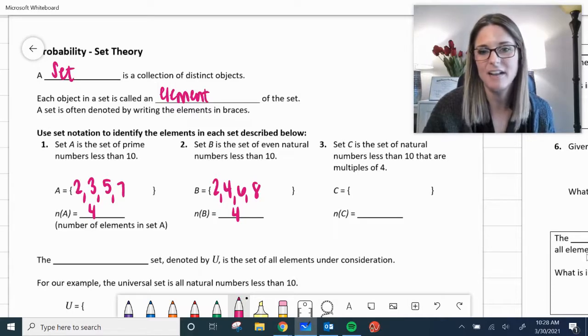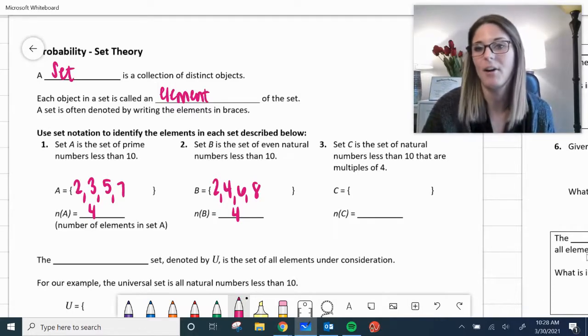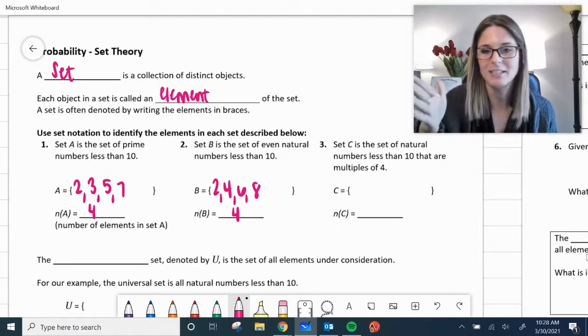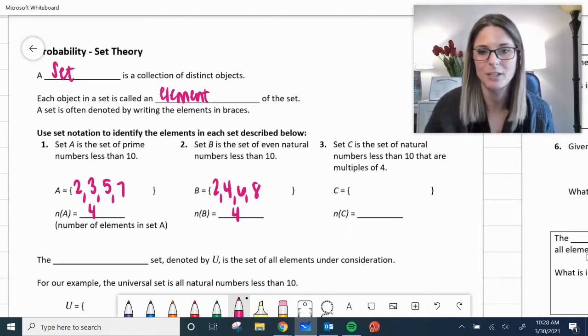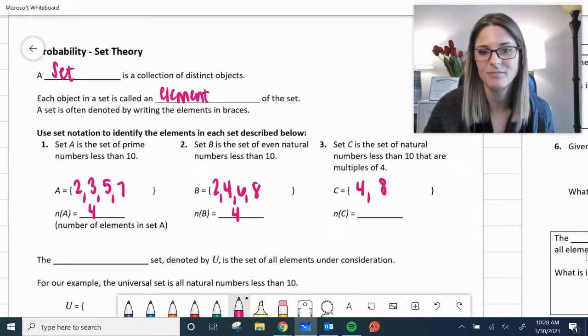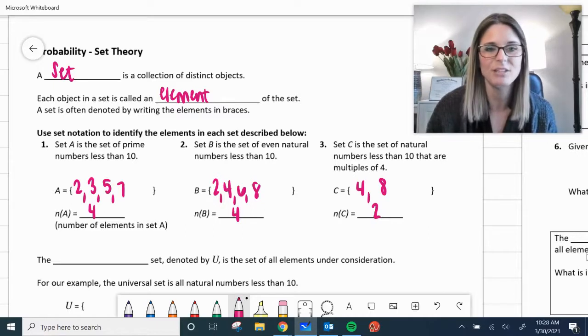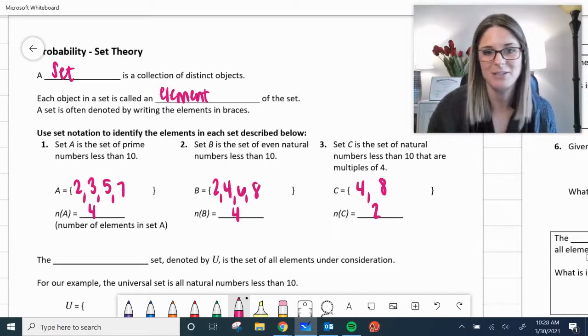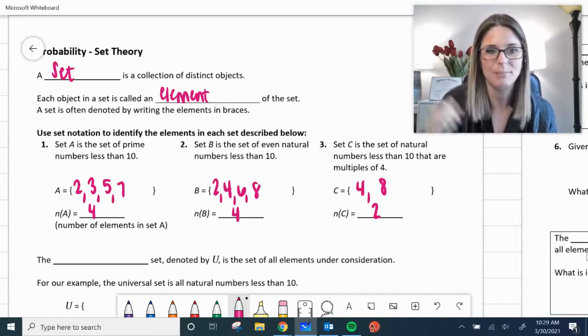Set C, the set of natural numbers less than 10 that are multiples of 4. So natural numbers less than 10 that are multiples of 4, so 4 and 8. We only have 2 numbers in this list. So that's just practicing sets, elements, set notation using the braces there.